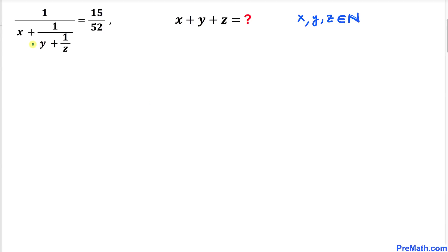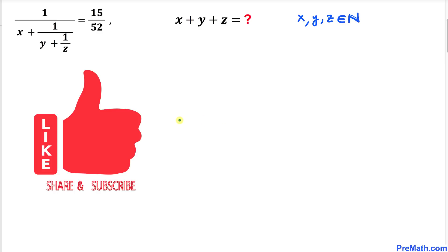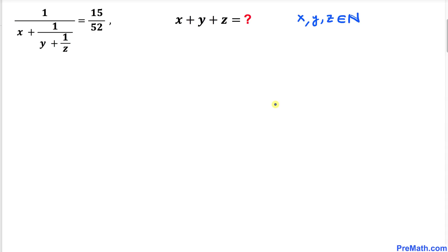Welcome to pre-math. In this video tutorial we have this rational equation: 1 divided by x plus 1 over y plus 1 over z equals 15 divided by 52. We are going to find the value of x plus y plus z. Keep in mind that x, y, z are going to be natural numbers. Please don't forget to give a thumbs up and subscribe.